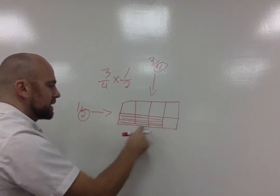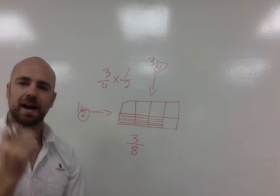Here we have three out of how many total. One, two, three, four, five, six, seven, eight. So that becomes my answer.